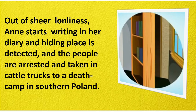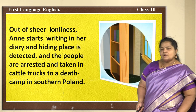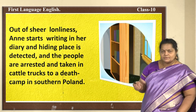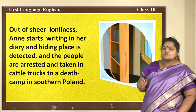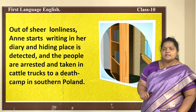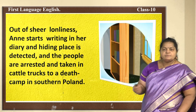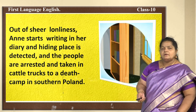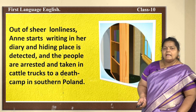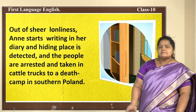Out of sheer loneliness, Anne starts writing in her diary. But the hiding place is eventually detected, and the people are arrested and taken in cattle trucks to a death camp in southern Poland. The Nazis discovered the hidden rooms, checked them, and dragged all those people away.